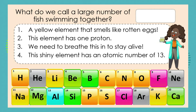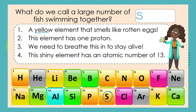Got the idea? Let's try this one. What do we call a large number of fish swimming together? Is it a flock of fish? Is it a herd of fish? I don't think so. Let's work it out. Clue one: a yellow element that smells like rotten eggs — well, that element is sulfur. So we start our answer with S.